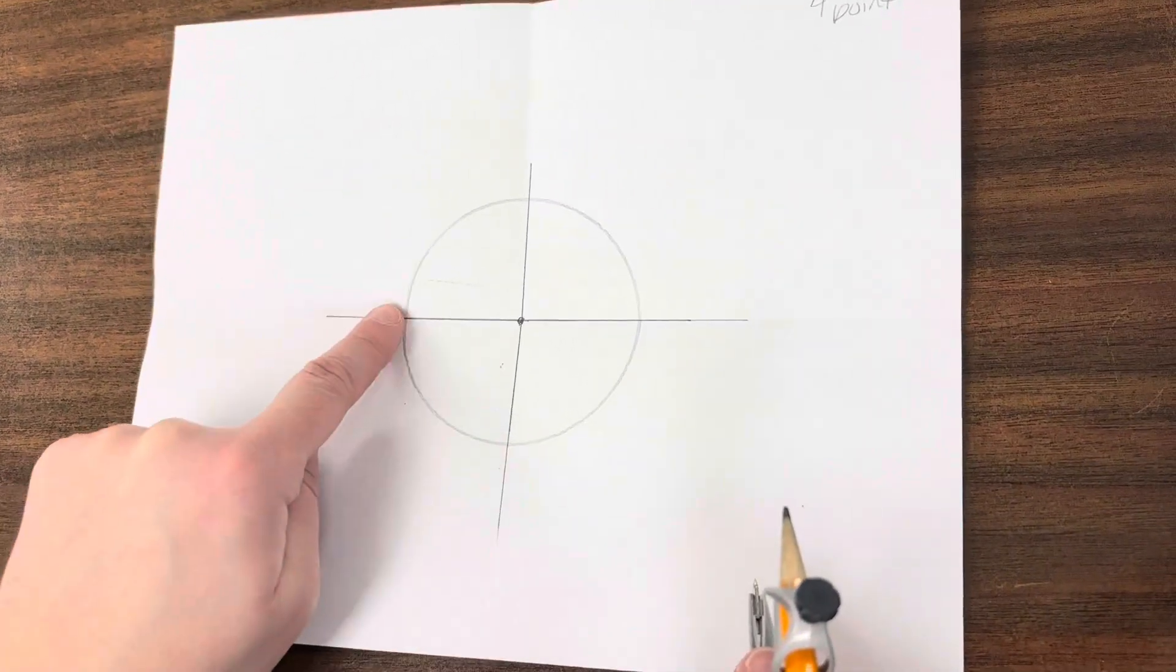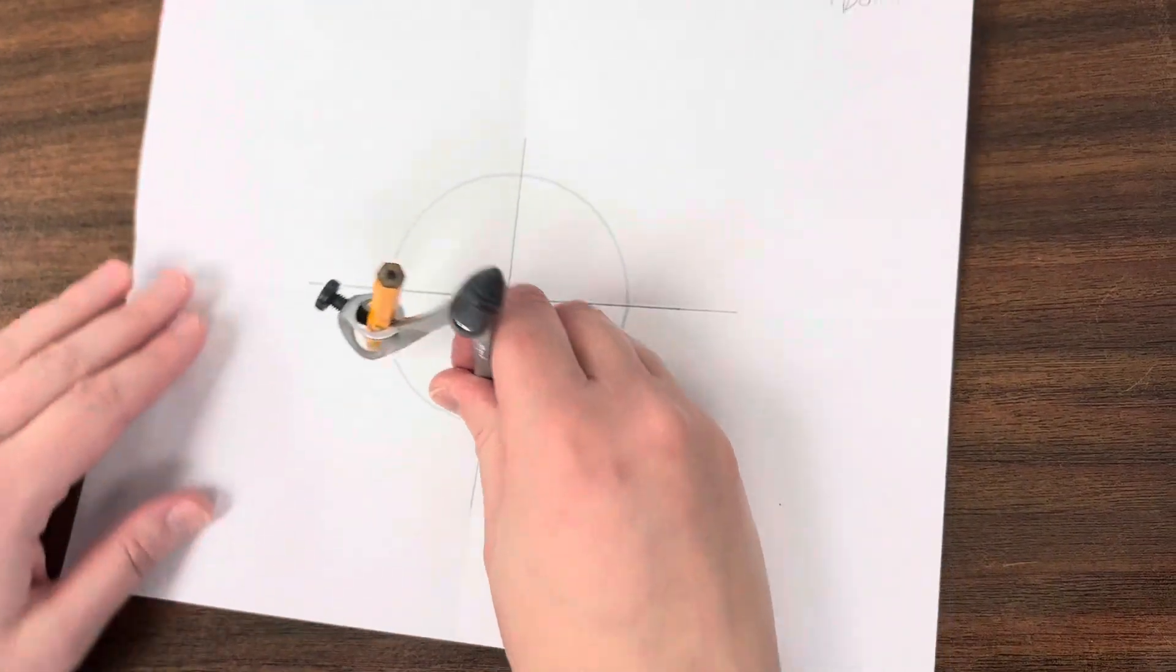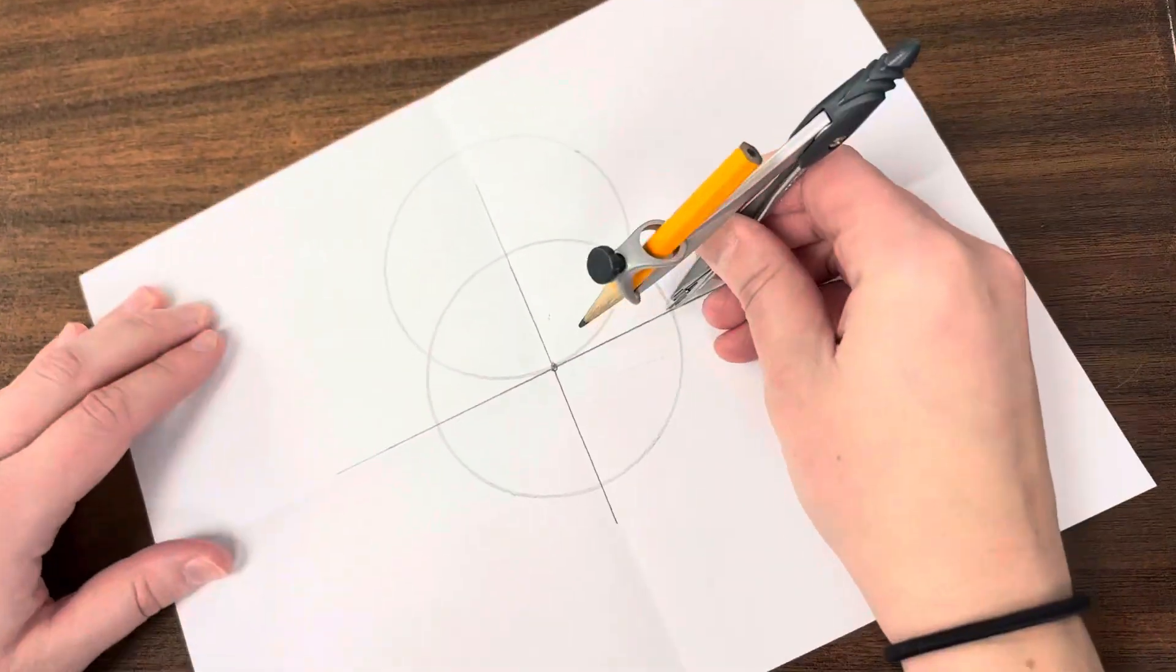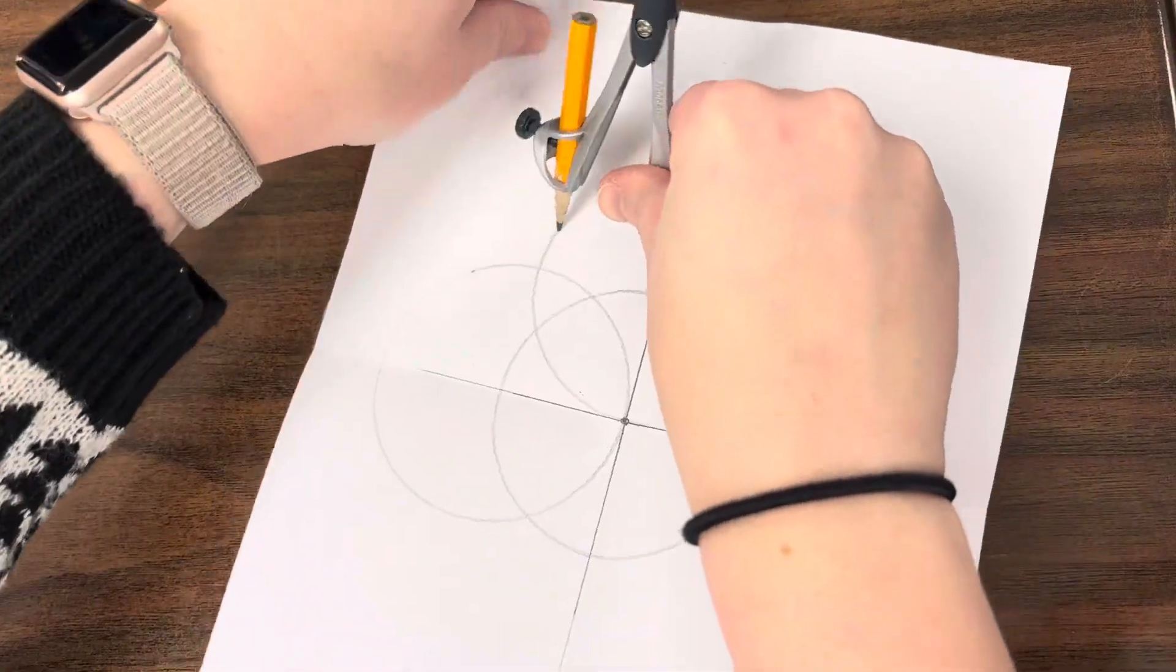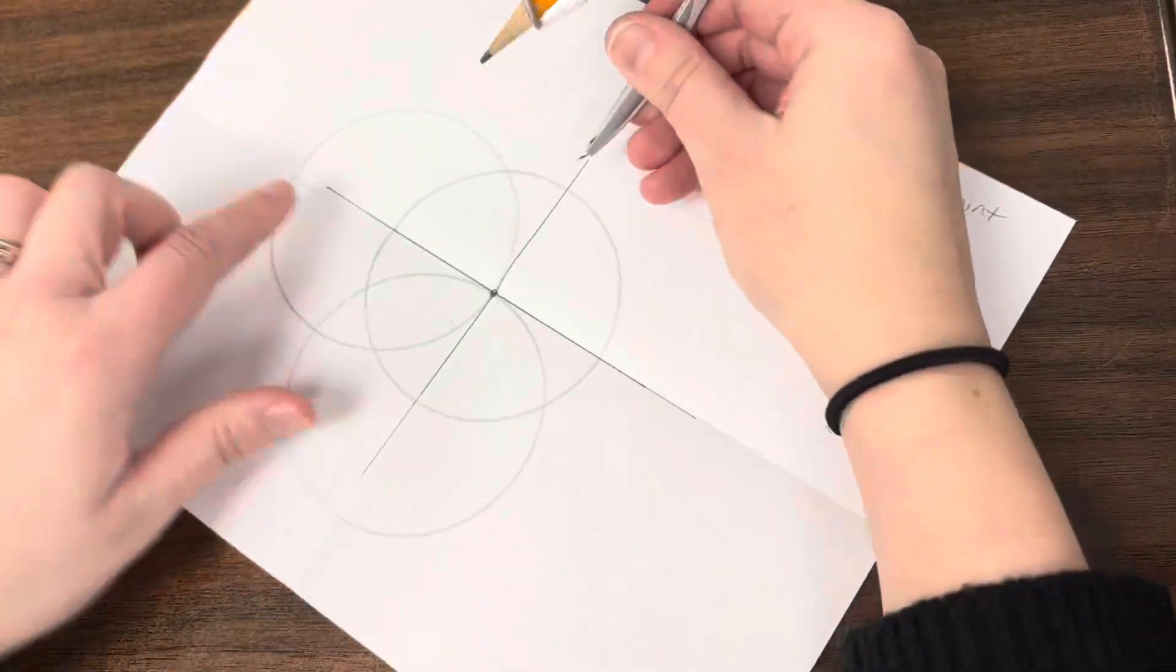Now I'm going to make a circle at each of - if you want to think of them as compass points: north, south, east, west - I'm going to make circles from each of those points. So there's one. Here's two.